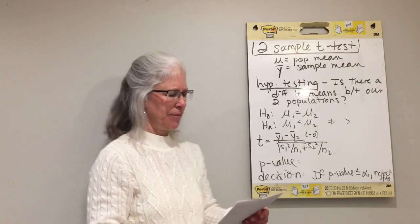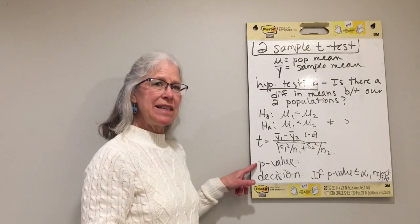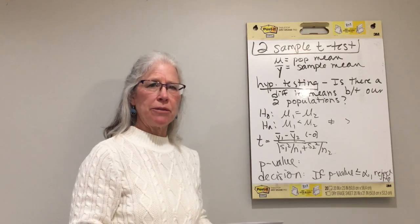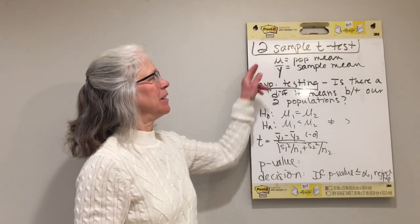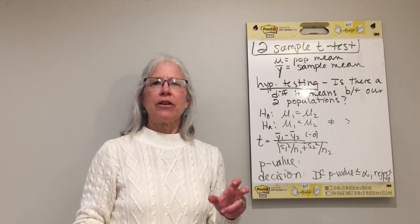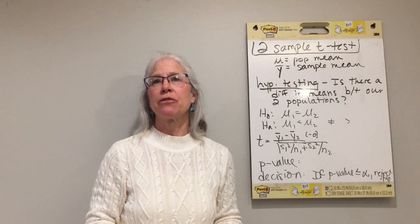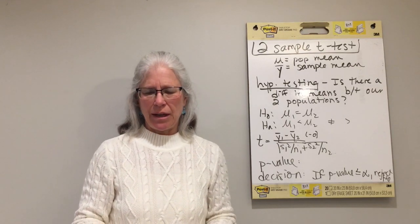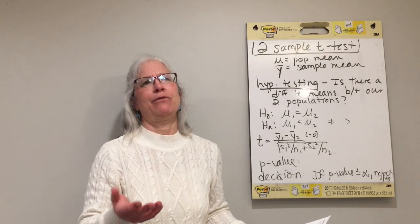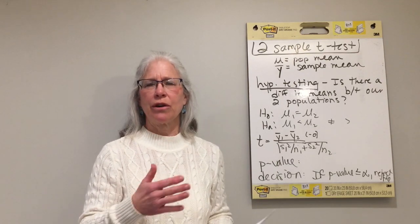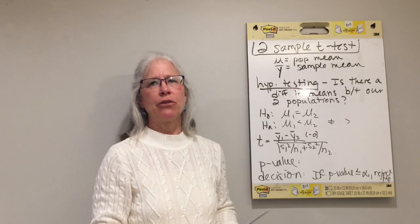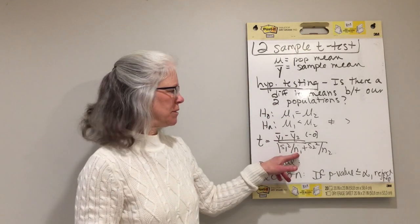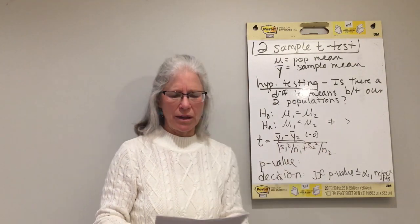We'll compute that t-statistic and then go to table T to find the p-value. For the two-sample t-test with unequal variances, the formula for computing degrees of freedom is very complicated, so I will always give that to you or we'll do this on the computer. If it's not given to you, you can just take the smaller sample size minus one — pick whichever of n1 or n2 is smaller, and subtract one.